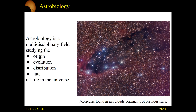But what does astrobiology cover? Let's look at this picture here. We're looking at gas clouds — some surrounding stars — and what we'll find sometimes are complex molecules in them. Those molecules and the gas clouds themselves are remnants of previous stars. So even when we scan the cosmos and look at the dust and debris just floating out there, not bounded to any planet, we're still finding complex molecules.